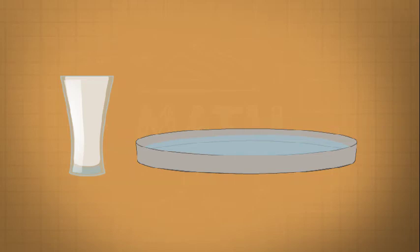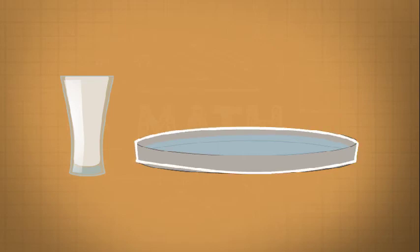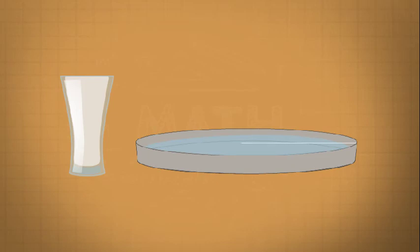But when we pour the water, it fills the entire plate and none of it spills. This is because not just the height, but the radius of the vessel also plays a very important part to determine the volume, that is the volume of water inside it.